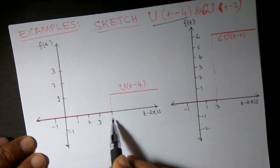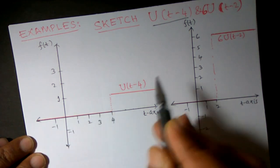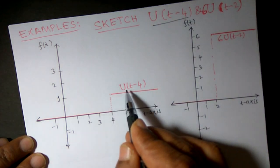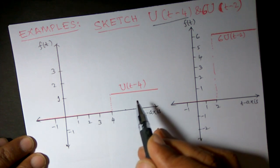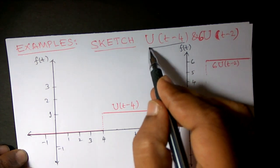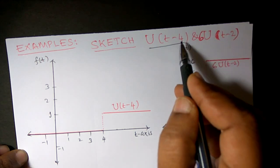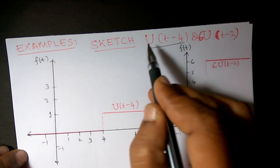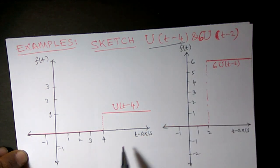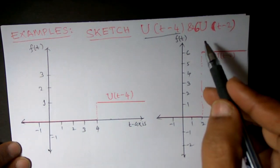So for u(t - 4): when t is strictly less than 4 the function value is 0 — the graph lies on the t axis — and when t is greater than or equal to 4 you get a red horizontal line at height 1. That is the meaning of u(t - 4).